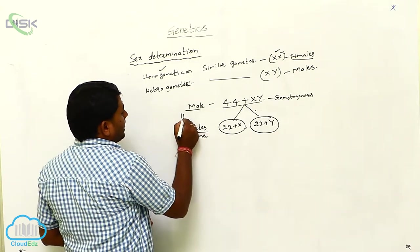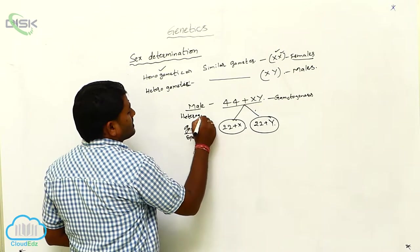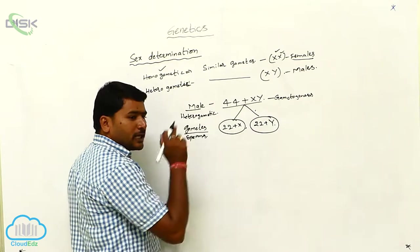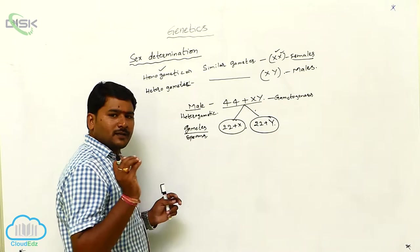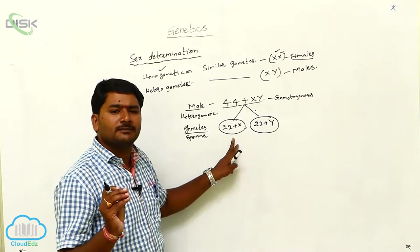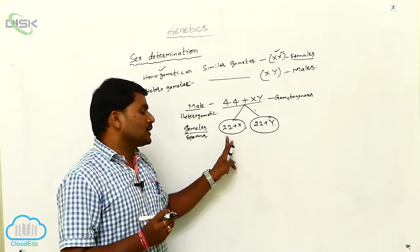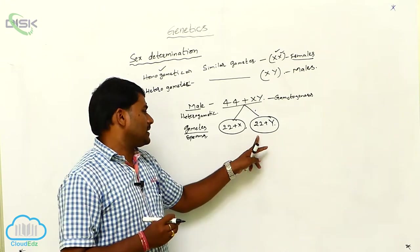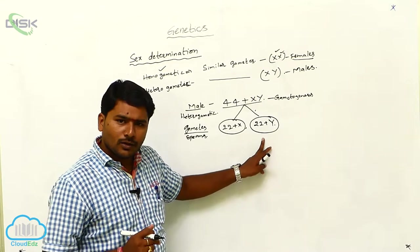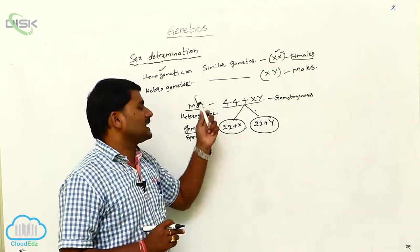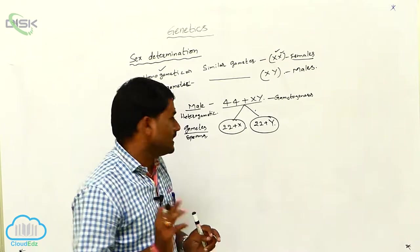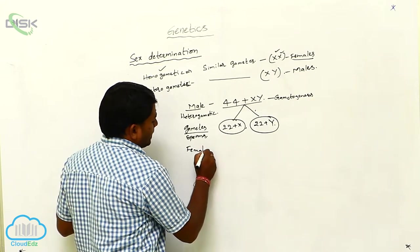That is why the male is called a heterogametic individual. The male is called heterogametic because it produces two types of sperms. In one type, the karyotype is 22 autosomes plus one X chromosome, and in the other type, 50% of sperms have 22 plus one Y chromosome. Since two different types of gametes are produced by a single male, the human male is heterogametic.